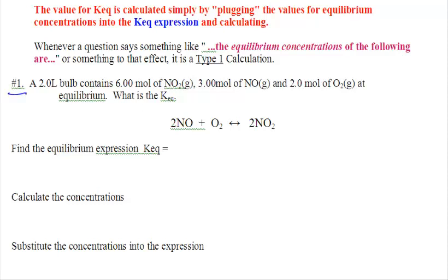In our question number one, we have a two-liter container, six moles of that stuff, three moles of that stuff, two moles of that stuff. We want to find the KEQ. First we need to write out the expression. So it's products over reactants, coefficients are exponents, and we are ignoring liquids and solids. Then we need to plug in the concentrations. And remember, concentration is big M, and it's moles per liter.